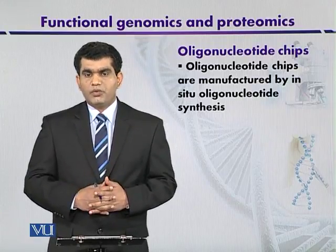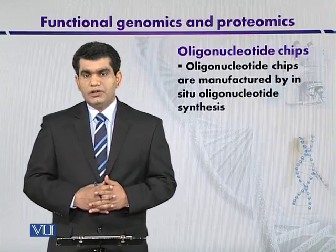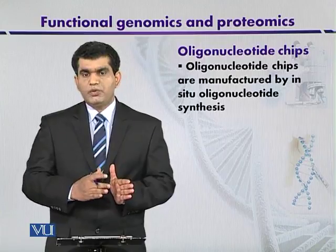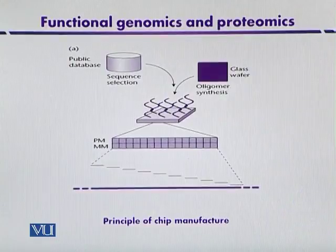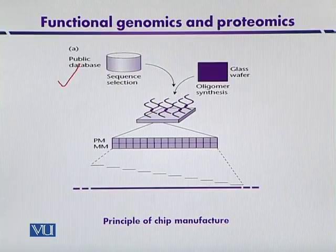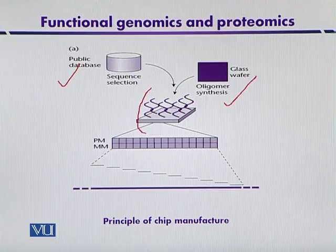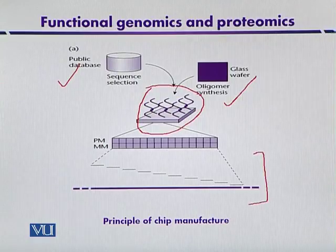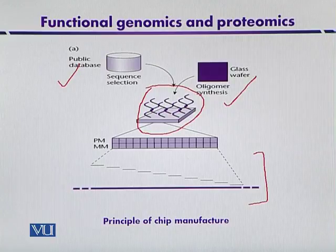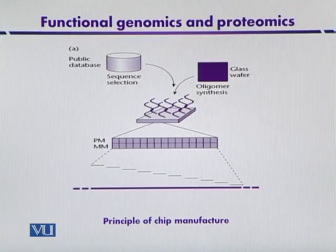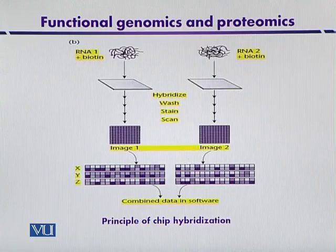The basic protocol for the development of oligonucleotide chips involves a synthesis surface. We have a public database — many databases are available online — and oligomer synthesis is carried out on the solid support, that is, glass slides. A gene with 20 non-overlapping segments may be represented on different spots, so synthesis is carried out on the solid surface. This is the basic principle of gene representation.